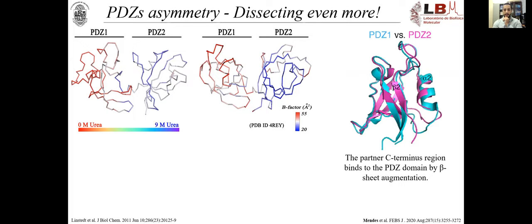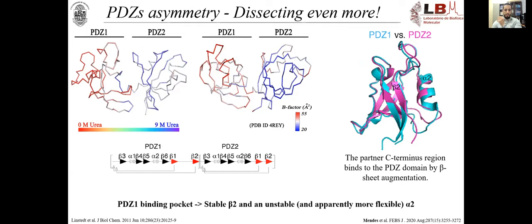This NMR data, this stability and dynamic data, correlates pretty well with the B factors from crystal structures. It seems that PDZ1 is indeed not only less stable but also more flexible. For the protein to interact with the PDZ, the partner C-terminus region binds to the PDZ domain by beta-sheet augmentation. In Grasps, we have a very unusual PDZ fold. What we have in the binding pocket of PDZ1 is a stable beta-2 strand but an unstable and more flexible alpha-helix 2. What controls the access to the binding pocket is much more promiscuous.